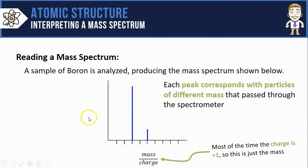Here for my boron atoms, the peaks can be found plotted at 10 and 11. That means some of the borons had a mass of 10, others had a mass of 11, which really means that my boron atoms come in two different isotopes, boron-10 and boron-11.